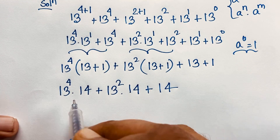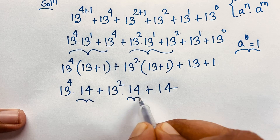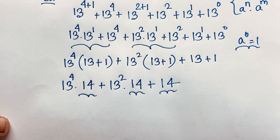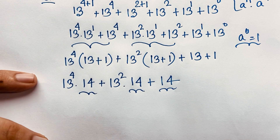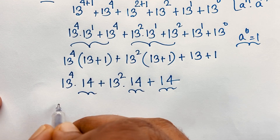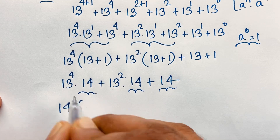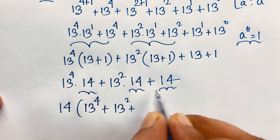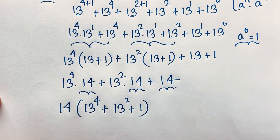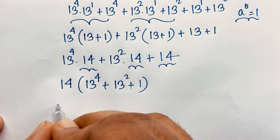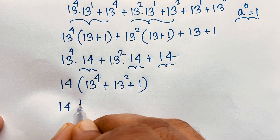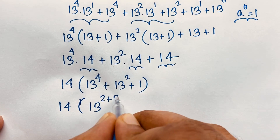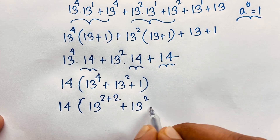Now, you can see here 14 is common — this is 14, this is 14, and this is 14. So at this moment, if I take 14 as common, it will be 14 times 13 power 4 plus this divide this is 13 power 2, plus this divide this is 1. Now, you can see here 14, and this 13 power 4 which is 13 power 2 plus 2, and this is 13 power 2, and this is 1.